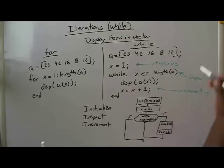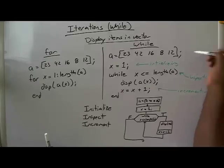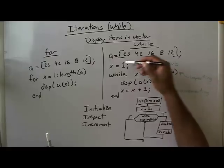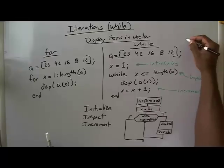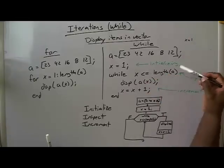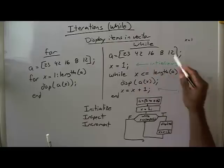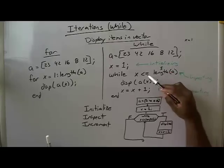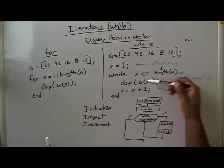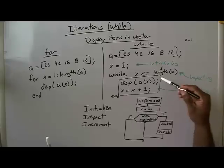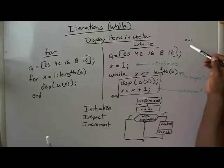Let's track the variables. We set A equal to 23, 42, 16, 8, and 12. x equals 1. While x is less than or equal to the length of A — the length of A is 5. Is 1 less than or equal to 5? Yes, so we execute the code block. We display A of x; x is 1, so A of x is 23. In the command window we would get 23 displayed.